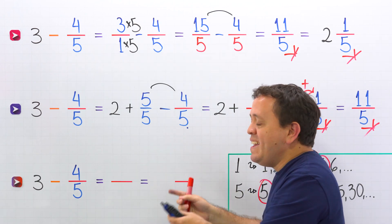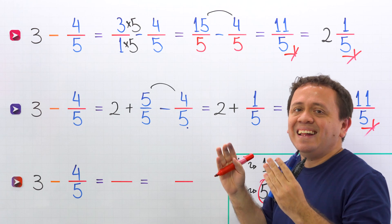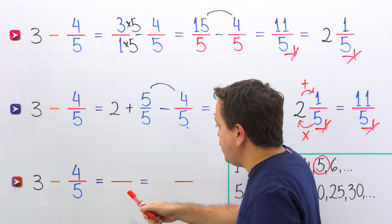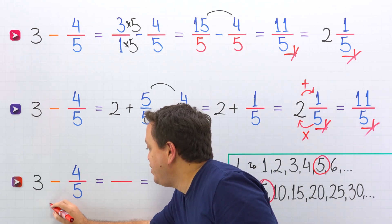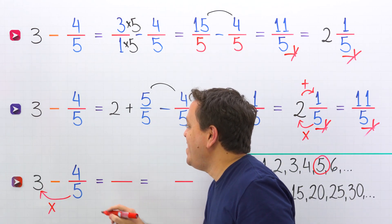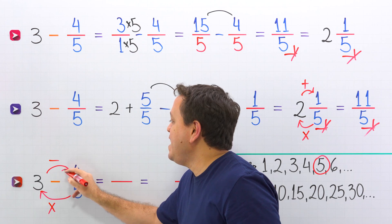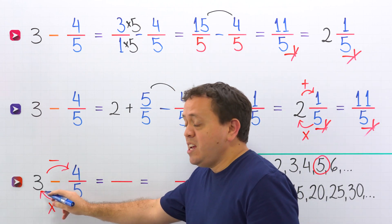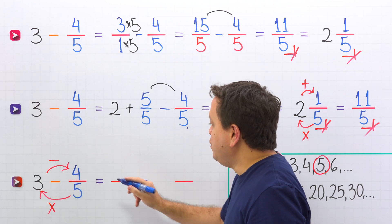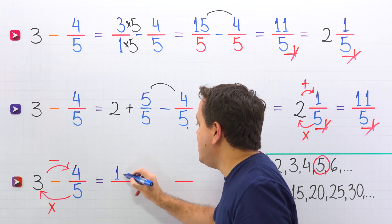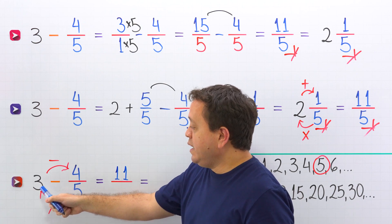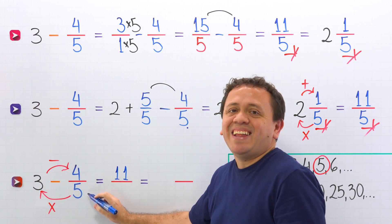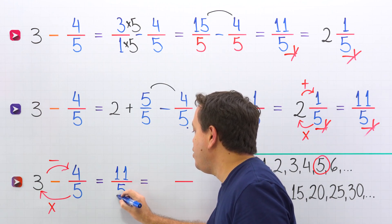Let's finish with the third method — here comes the quick method, and this is the method that I always use. We have the same example: 3 minus 4 fifths. To find the difference, we'll start by multiplying the denominator by the whole number, and then we subtract the numerator. That's it — it's a piece of cake. Here we go: 5 times 3 is 15, minus 4 gives us 11. And then we keep the denominator of the fraction — 5.